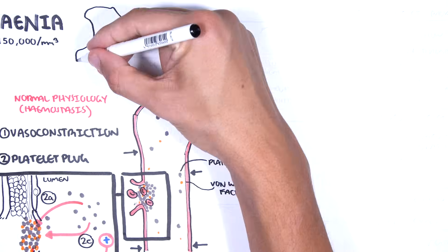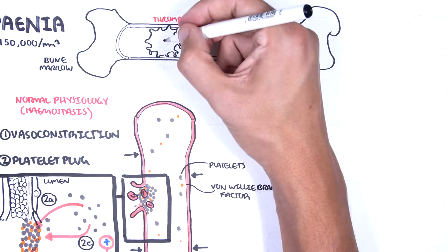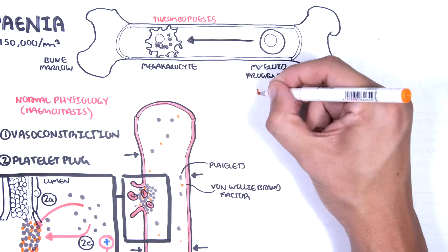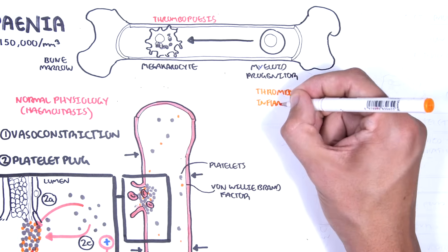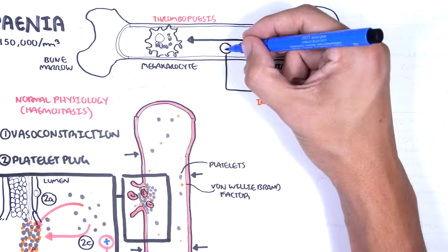Platelets are produced in the bone marrow by megakaryocytes, which are derived from the multipotent hematopoietic progenitor cells from the myeloid lineage. Thrombopoiesis is stimulated by thrombopoietin and inflammation, such as from cytokines like interleukin-6.